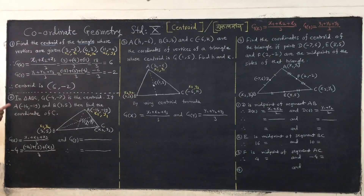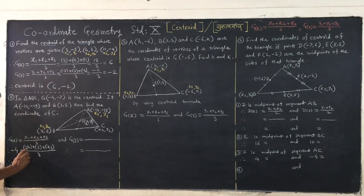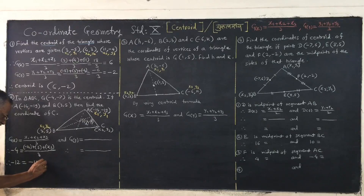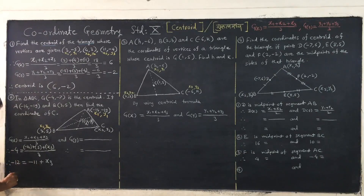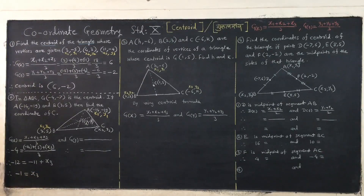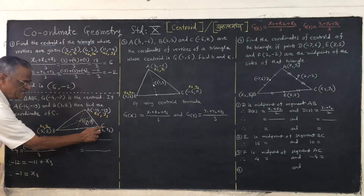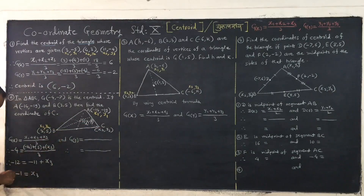Now solve this equation. Multiply both sides: 3 times minus 4 gives minus 12 equals minus 14 plus 3 plus x3, which is minus 11 plus x3. Transfer to the left-hand side: minus 12 plus 11 equals x3, so x3 equals minus 1. This is the x-coordinate of point C.